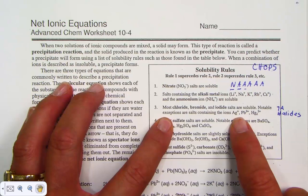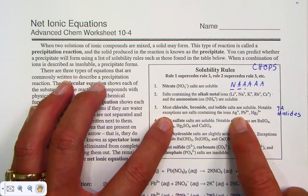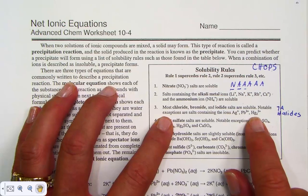Lead chloride, lead bromide, lead iodide would indeed be insoluble. They're rule breakers.